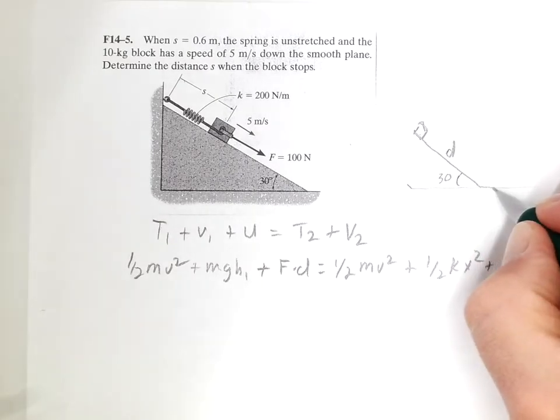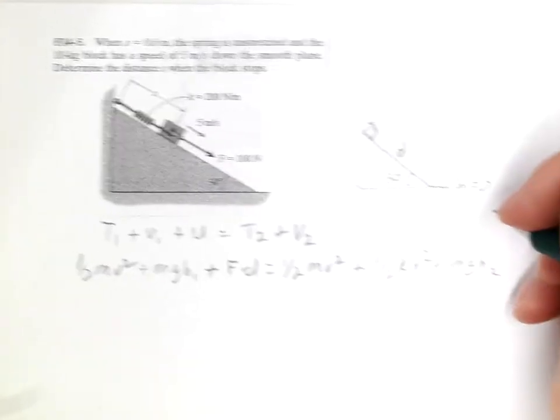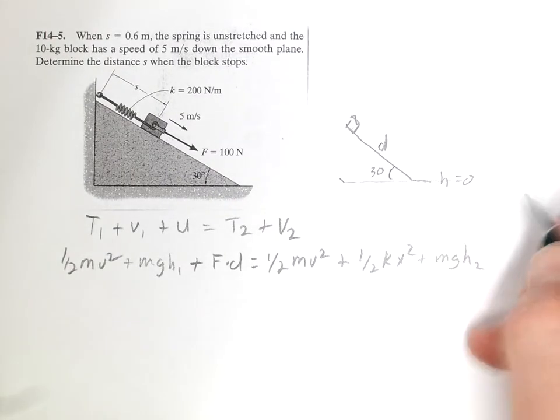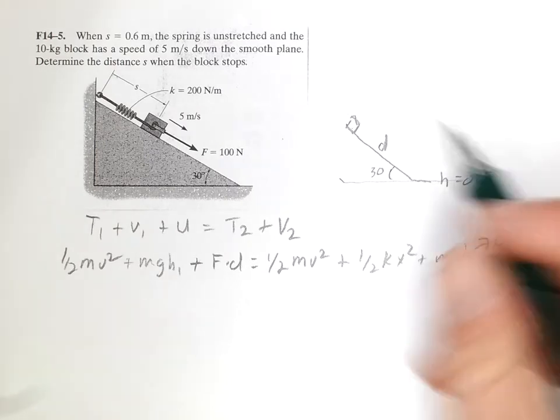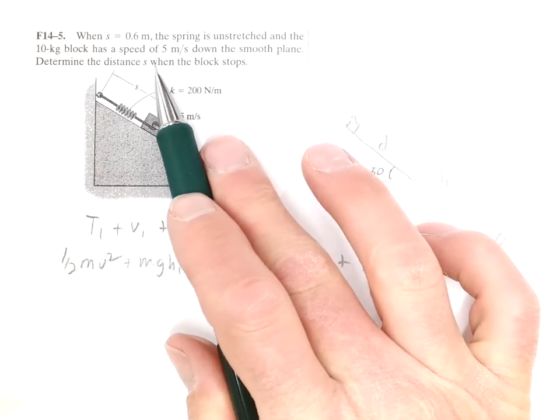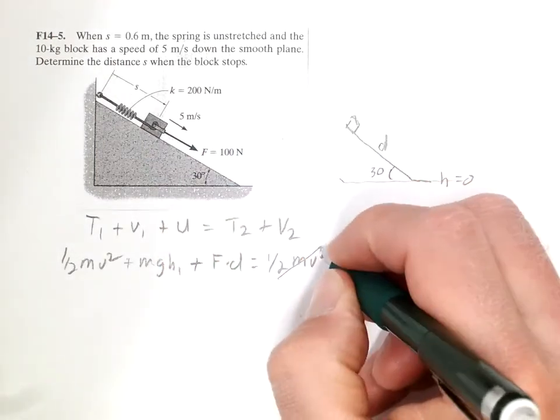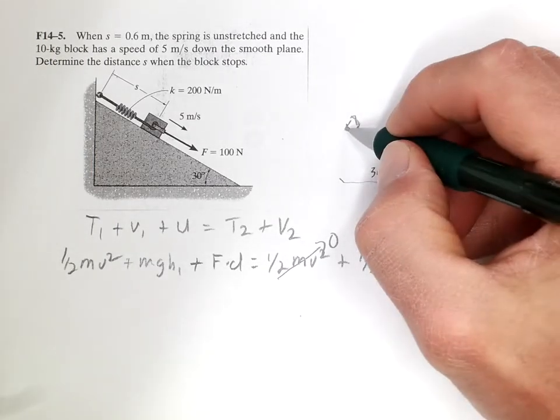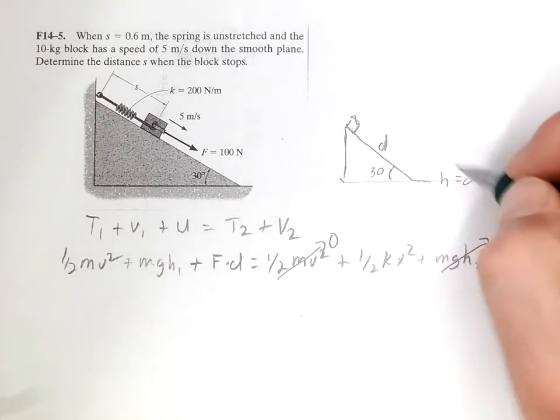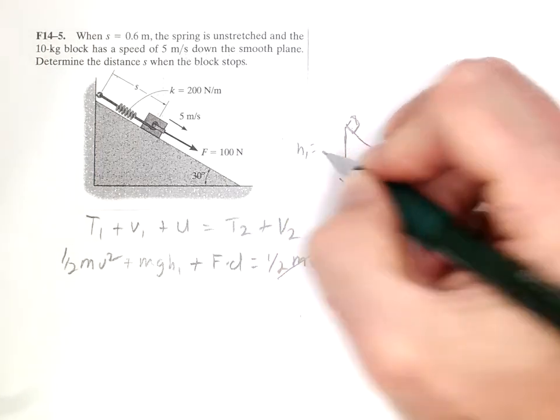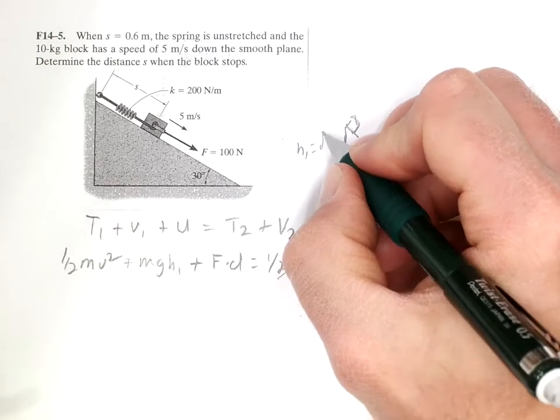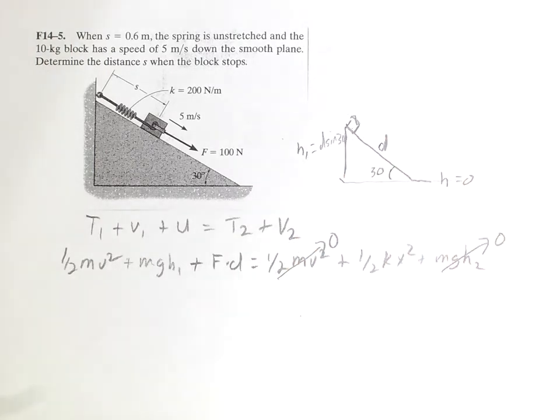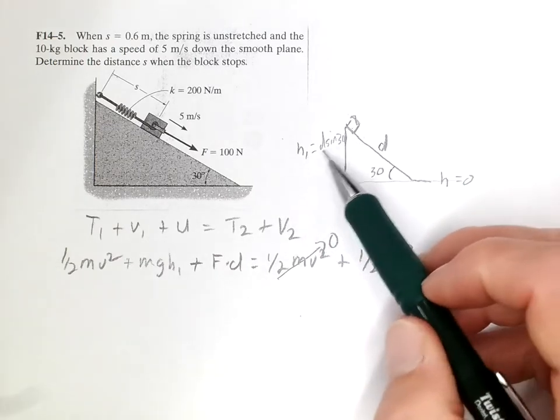Now, if I call this where it stops, H equals 0. That means H2 is 0, and this goes to 0. It also says the block stops, so this one is 0. Then H1 is equal to D sine 30.